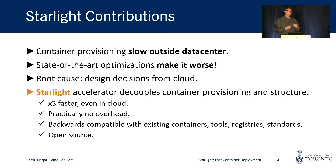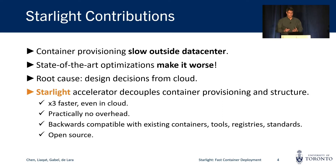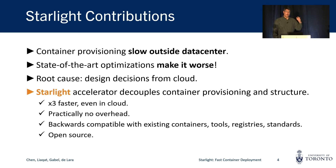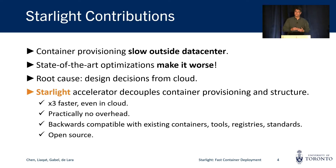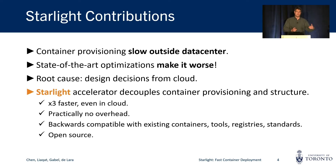In this work, we find that container provisioning outside the data center is much slower than it should be, and that state-of-the-art optimizations designed for the cloud make the problem even worse. Our analysis finds that the root cause of the slowdown is design decisions that are inappropriate for edge environments. Starlight is an open source container accelerator that decouples the structure of containers from how we provision them, resulting in much faster container provisioning both in the cloud and outside it, for both fresh workers and updates, with almost no overhead and backwards compatibility with existing workers, registries, and so on.